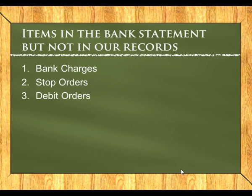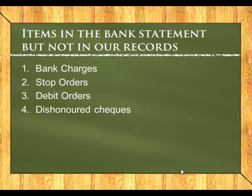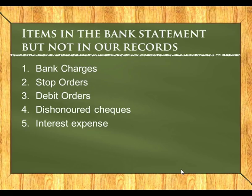A debit order is when we as a business give another business permission to withdraw money from our account. The permission is not given for a specified amount. For example, if we need to pay our telephone account to Telecom, we don't know how much we owe them until the month is actually up, so it's better to just give them permission to withdraw that money. Then we have dishonored checks — if people have paid us and we thought we had the money, but it turns out they don't have money in their account, the check is dishonored, also referred to as a referred-to-drawer or RD check. Interest expense is when we are on overdraft and need to pay the bank interest. The opposite is interest income, if we have money in our account and the bank has given us interest income.